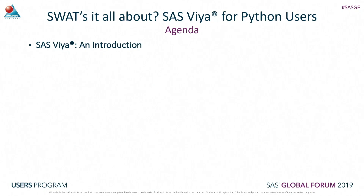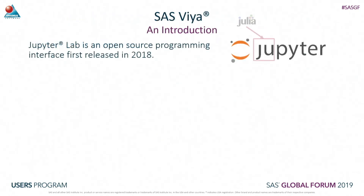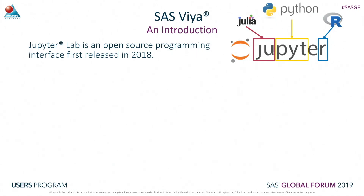So I'll start off with a brief introduction to SAS Viya. Today we're going to be looking at using the Jupyter Notebook or JupyterLab, which is an open source programming interface first developed and released in 2018. It integrates three main languages - Julia, Python, and R - into a single interface.